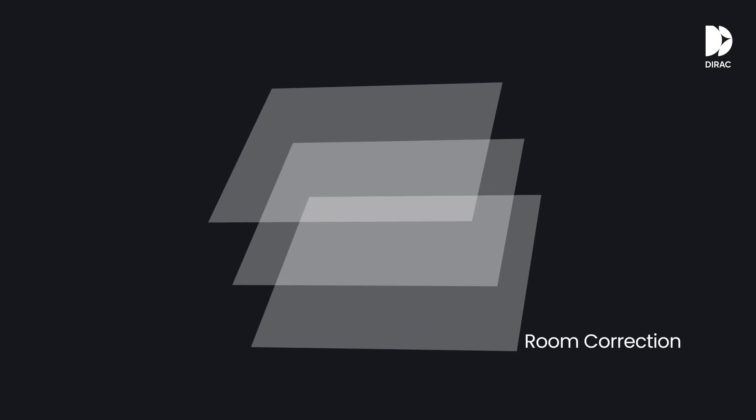Dirac Live consists of three products, which could be considered as layers, each building upon the last and addressing different problems: first, room correction; then bass control; and active room treatment. We'll go through these one by one.